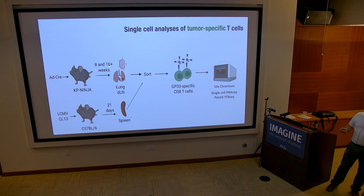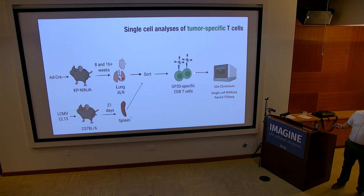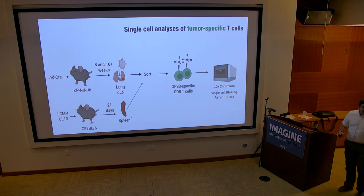To ask this question — this is published work — we initiated tumors in mice, turned on antigens, and then at week 8 or week 16+ sorted out antigen-specific CD8 T cells from the lymph node and lung tumors using MHC class I tetramers to look for endogenous CD8 T cells. We then ran single-cell RNA-seq and paired TCR-seq, allowing us to understand the clonality of T cells in different locations. We also used the clone 13 model at day 21 as a comparison, since it has both exhausted and precursor cells.